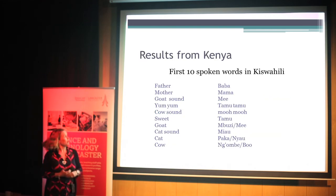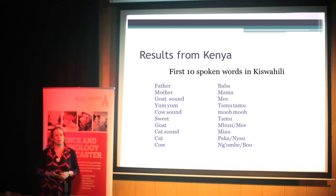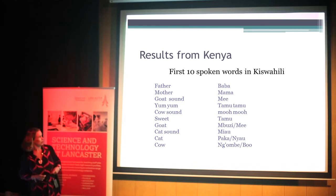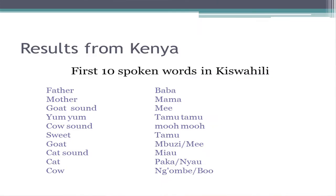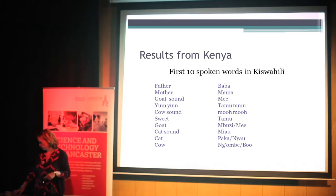In case you're interested, these are the first 10 spoken words in Kiswahili: mummy, daddy, 'me' — which is what the goat says — 'yum yum,' what the cow says — and sounds and names for cats, cows, and goats. That's what they have in a small Kenyan coastal village.